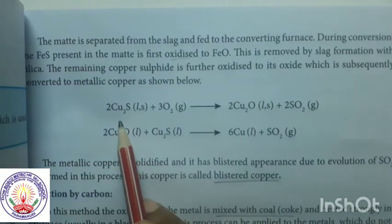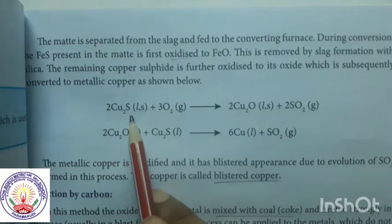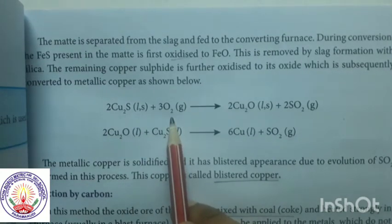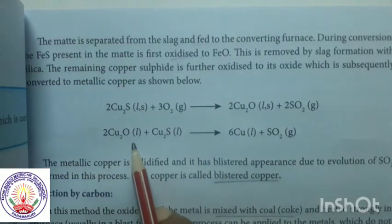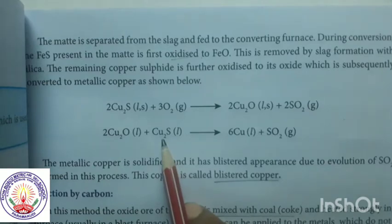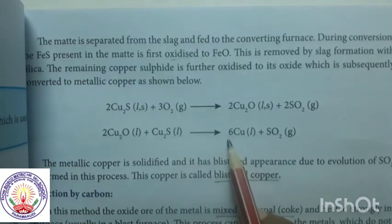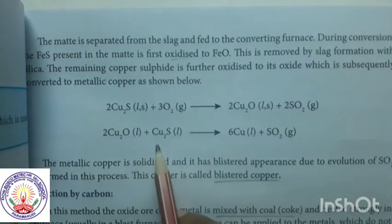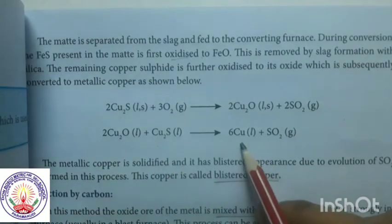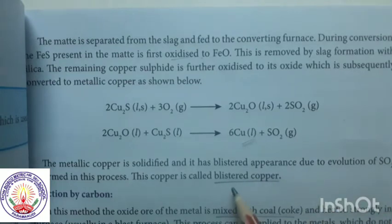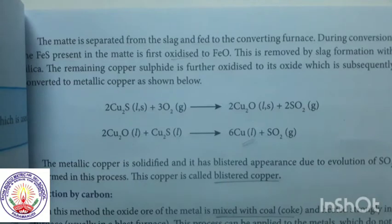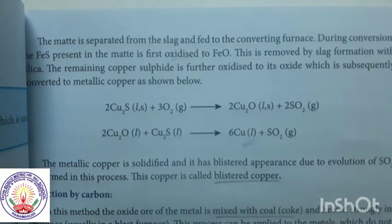Cu2S is treated with oxygen and forms copper oxide. This copper oxide is then treated with Cu2S and we get pure copper — here self-reduction is taking place. The pure copper obtained is in a liquid medium with bubbling, and since it has blisters it is called blister copper.